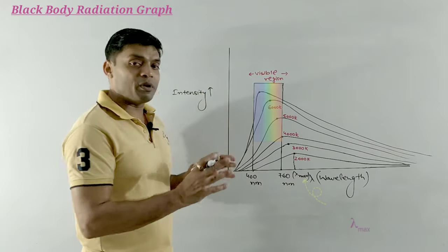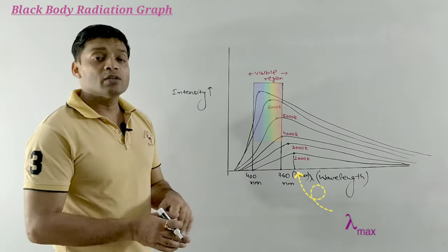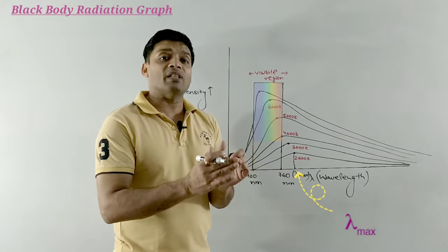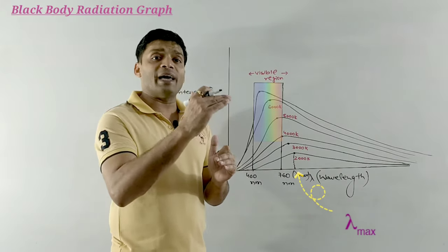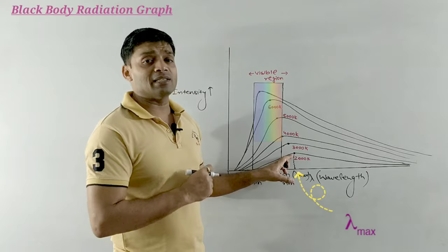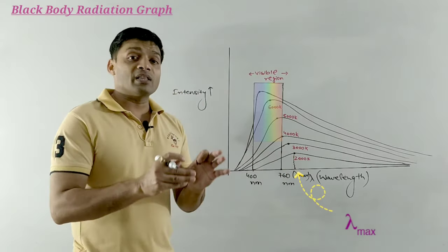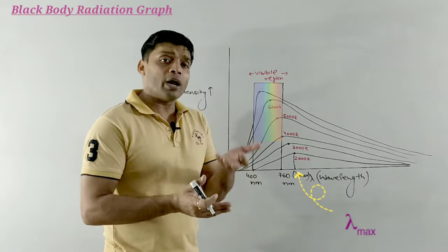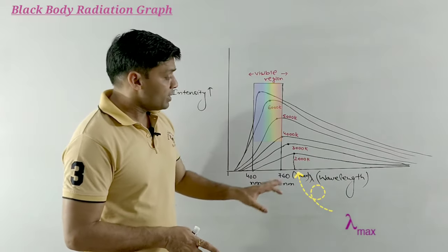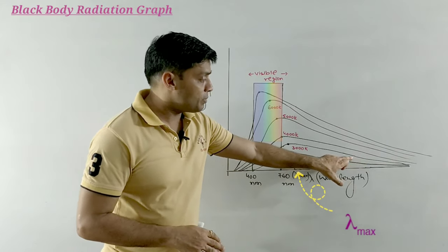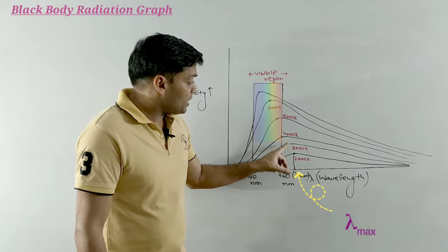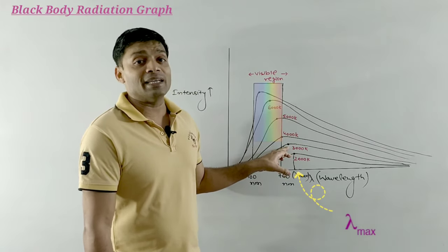You can see that all wavelengths are released by the black body, but some wavelengths have higher intensity, and there is one particular wavelength with the highest intensity — that is lambda max. Further, you can see in this graph that when we go to a higher temperature, every wavelength releases a greater intensity and the peak in the graph attains a higher height. But at the same time, the radiation corresponding to that maximum intensity shifts towards a lower wavelength.